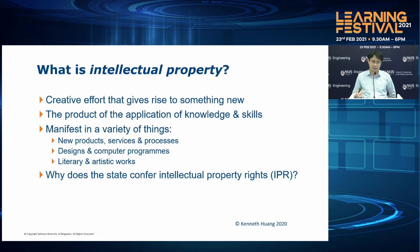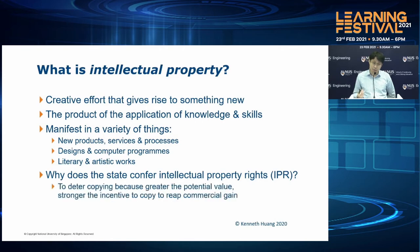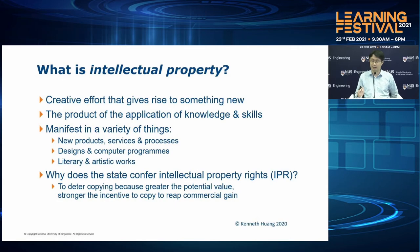Why does the state or government confer intellectual property rights? States give IPR to deter copying or infringement. The greater the value of the technology or invention, the stronger the incentive to copy and reap commercial gain without putting in the R&D and hard work. That is exactly what IPR is for — to protect against infringement and imitation. Enforcement is just as important as getting the patent, because if you don't enforce, companies could potentially get away with copying or imitation.